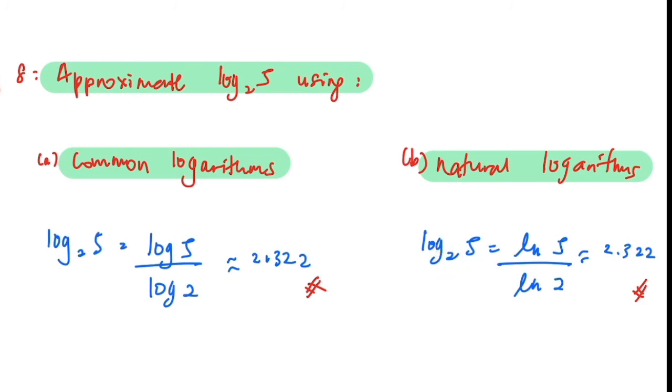So here we can just use a calculator, so the answer is the same, 2.322. You can see that the answer is the same, so it's up to you if you want to choose which one. So that's the end of the basic rules of exponential and also log.